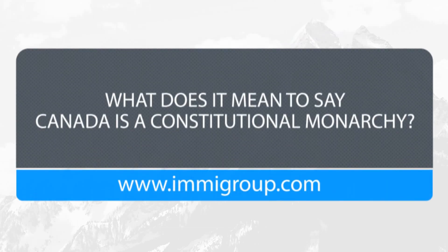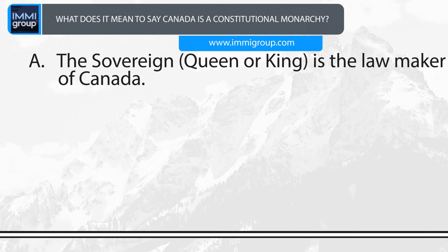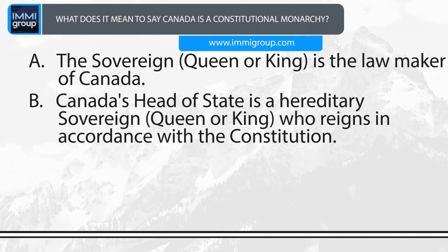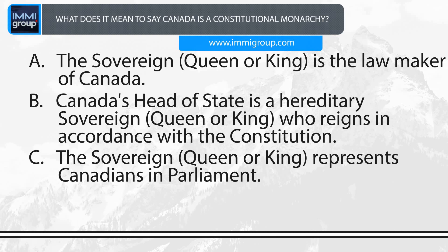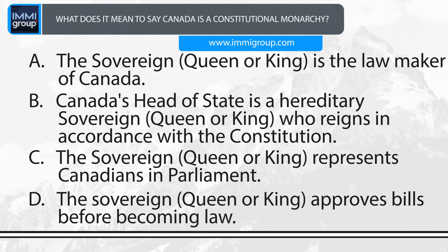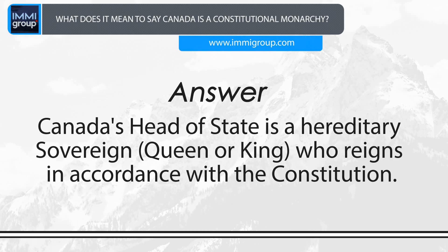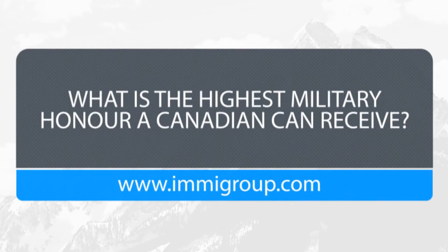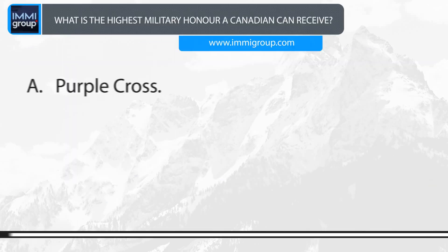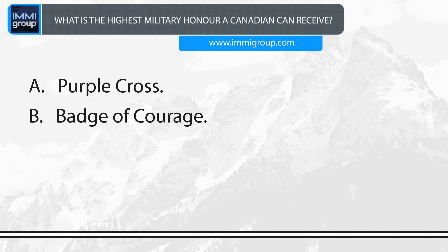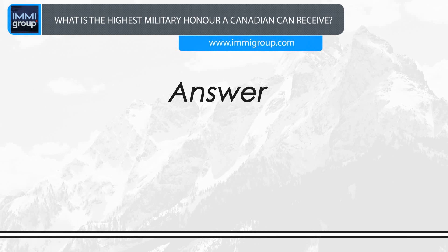What does it mean to say Canada is a constitutional monarchy? A. The sovereign king or queen is the lawmaker of Canada. B. Canada's head of state is the hereditary sovereign queen or king who reigns in accordance with the Constitution. C. The sovereign queen or king represents Canadians in Parliament. D. The sovereign queen or king approves bills before becoming law. Answer: Canada's head of state is the hereditary sovereign queen or king who reigns in accordance with the Constitution. What is the highest military honour a Canadian can receive? A. Purple cross. B. Badge of courage. C. Order of merit. D. Victoria Cross. Answer: Victoria Cross.